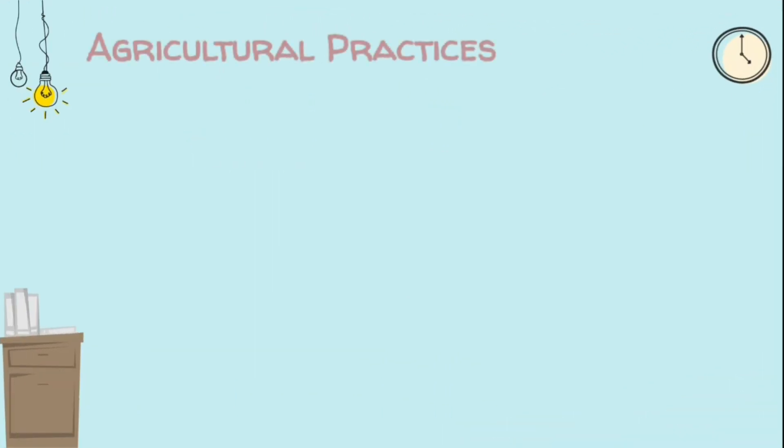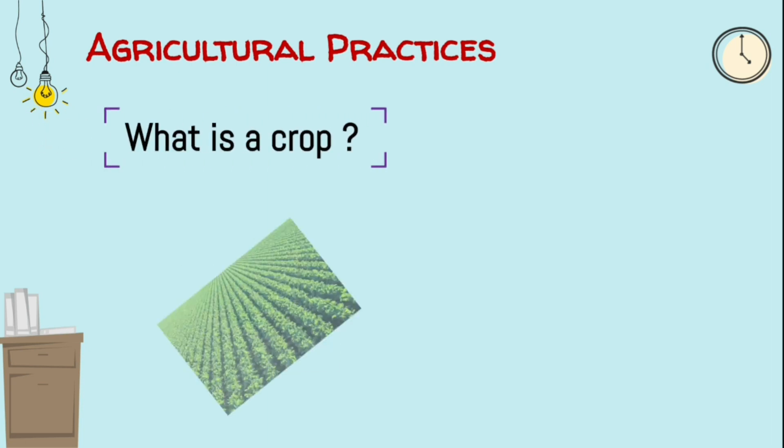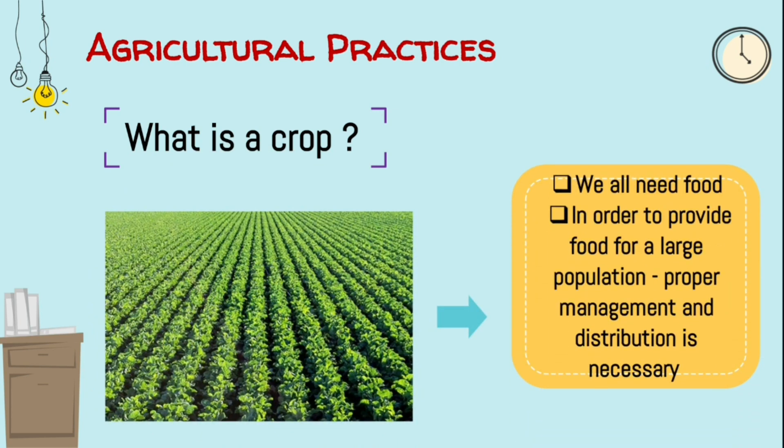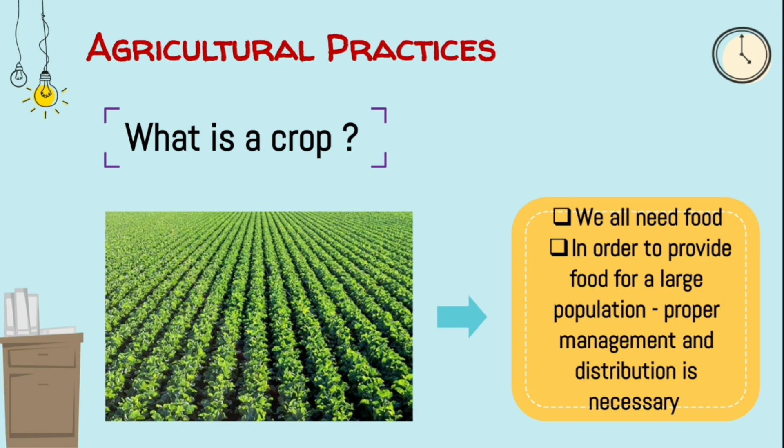Now let us see about agricultural practices. What is a crop? When the same kind of plant is cultivated on a large scale at one place, it is known as crop.